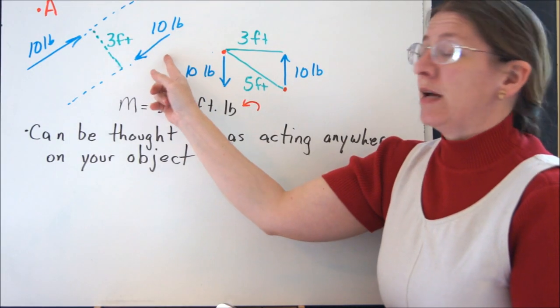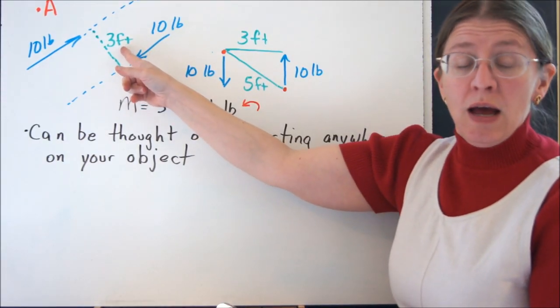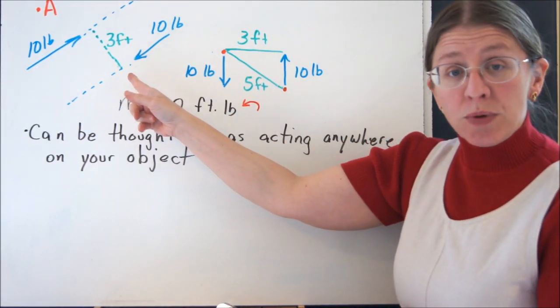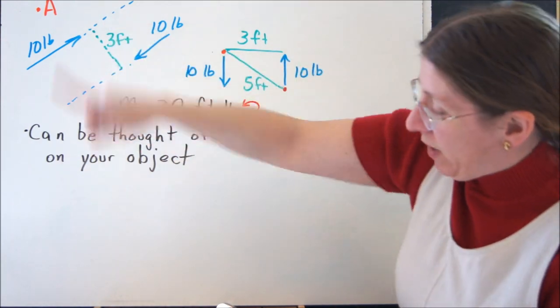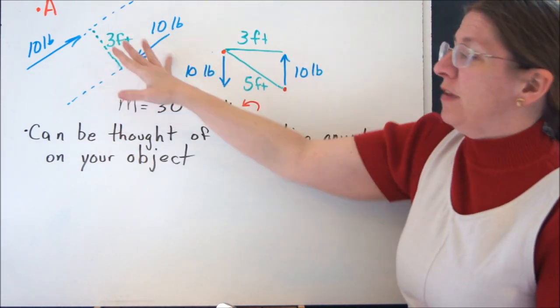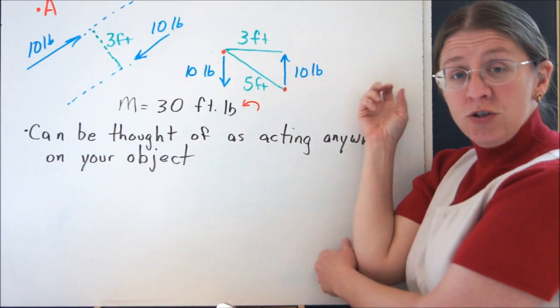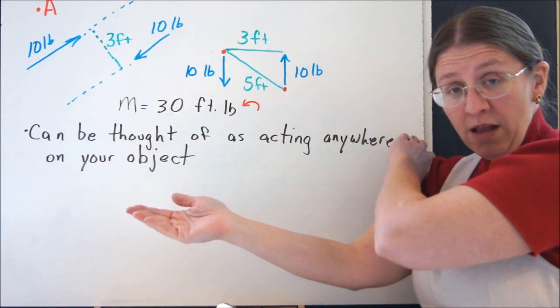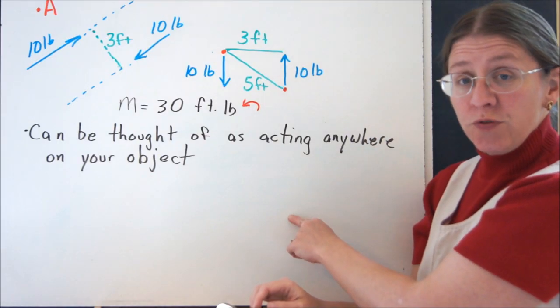So these two 10-pound forces are separated by distance 3, and your couple is going to be 10 times 3, and it will be going this way. If you think about how these two forces are going to turn this, it's going to rotate clockwise, sort of no matter where you put your finger.